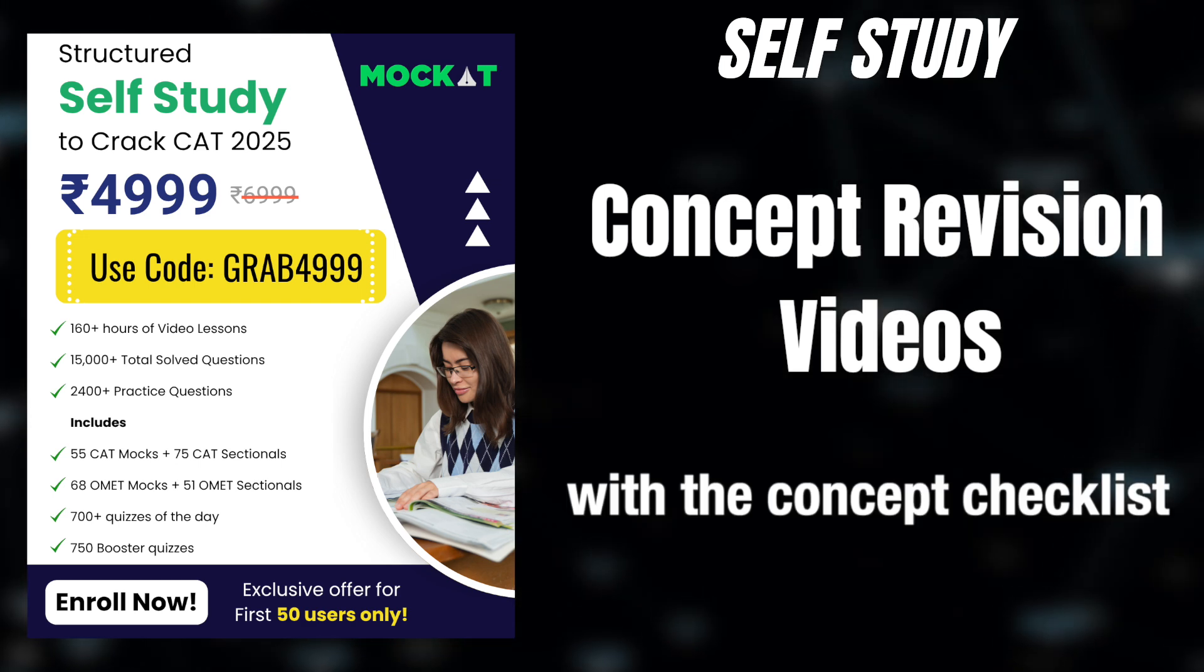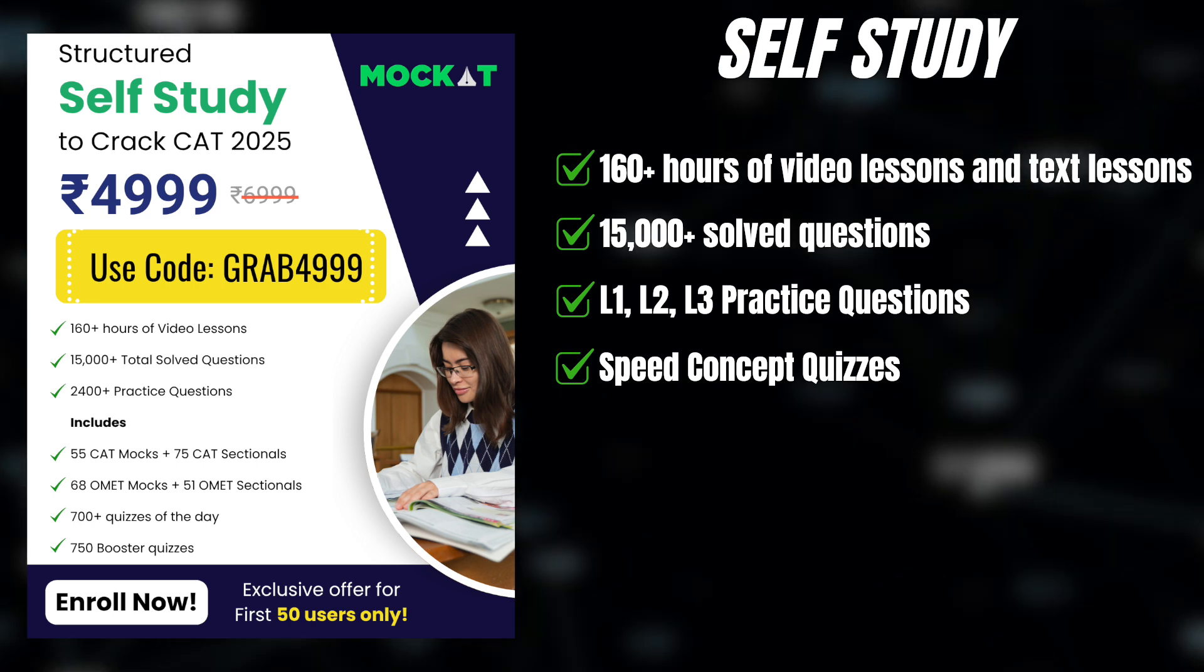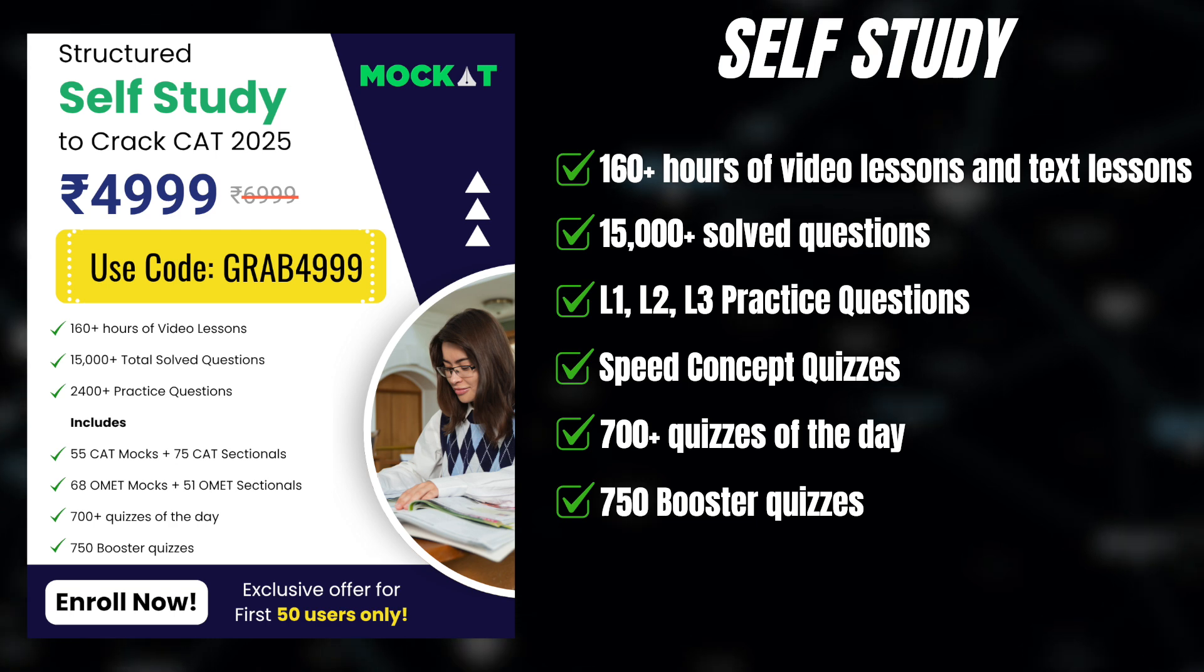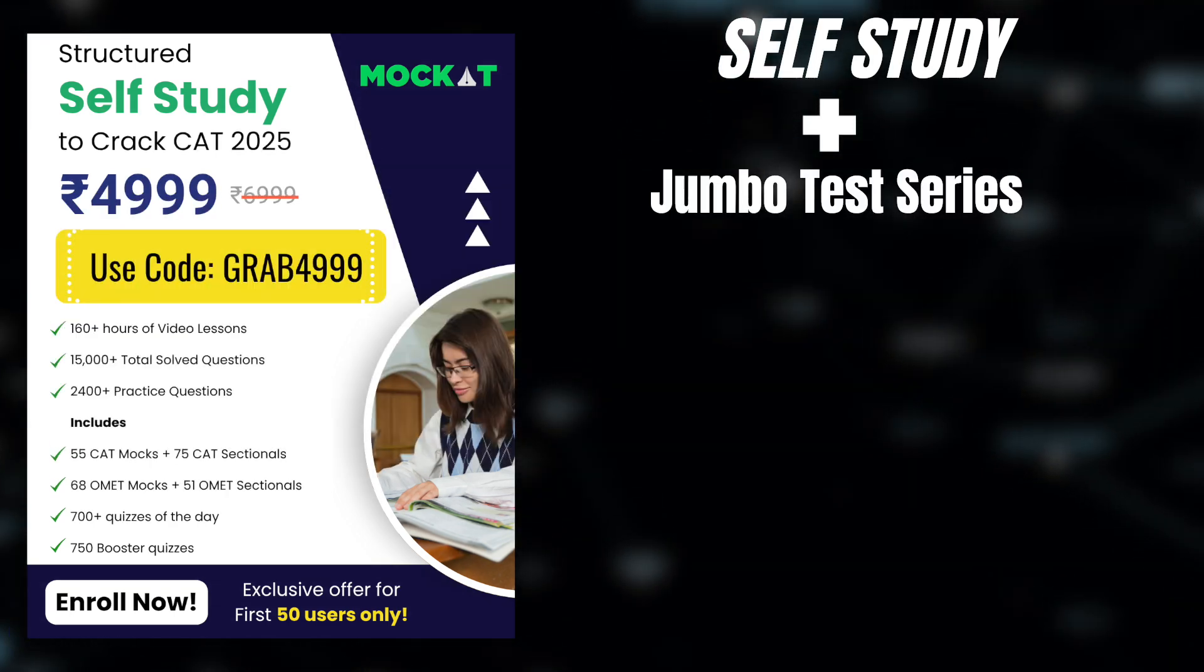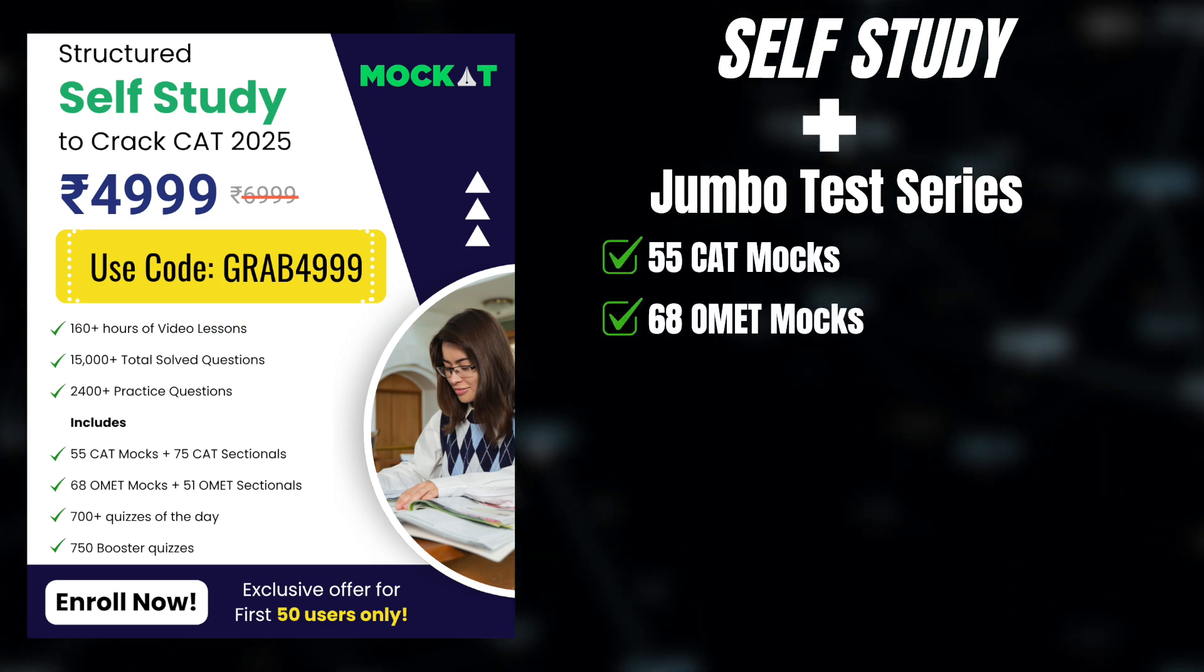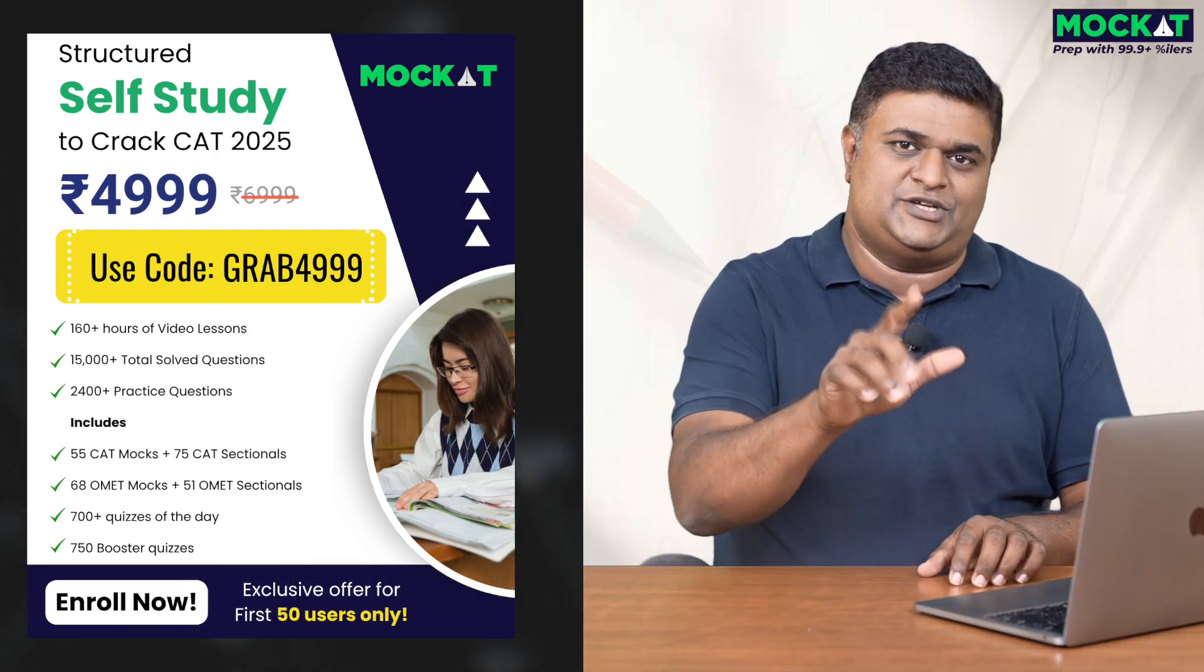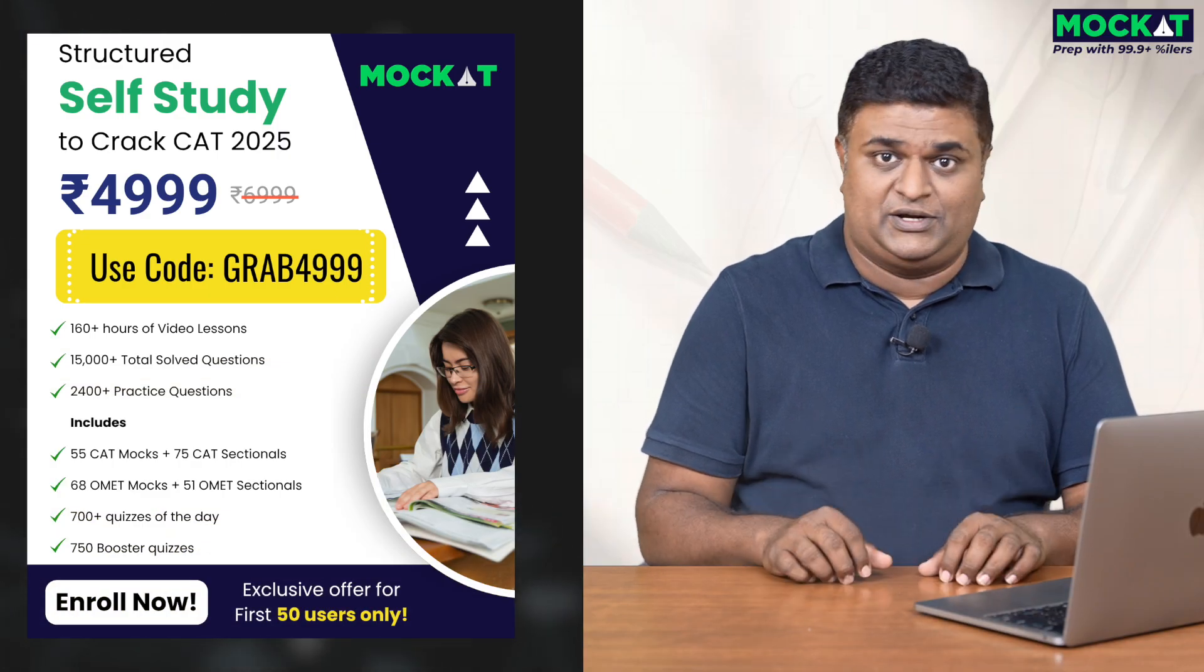It also has your L1, L2, L3 practice. It has speed concept questions to ensure that you have learned things the right way. It also contains 700 daily quizzes, 750 booster quizzes, and, of course, the Jumbo Test Series Pack. This Jumbo Test Series Pack includes 55 CAT mocks, 68 mock OMETs, and you're going to be getting about 126 sectionals. This is one of the largest test series available for you. All of this, at just rupees 4999 for a very limited time. Use the coupon code GRAB4999. Hope it works.